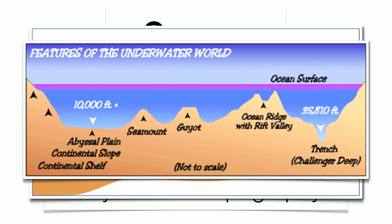On the Abyssal Plain you have some features: you have trenches, you have ridges, you have islands, you have underwater mountains called seamounts, and you have underwater mountains that are flat-tops called guyots. So you have a significant number of features that can be found along the ocean bottom. Notice that the ocean bottom is not completely flat.